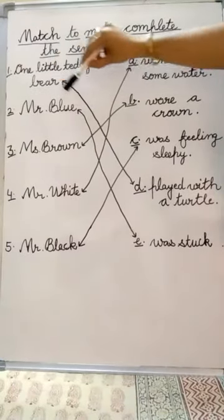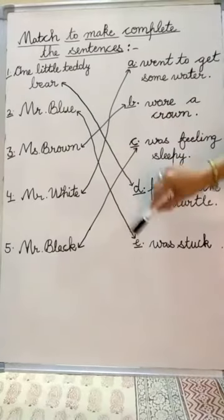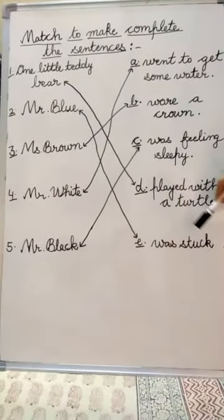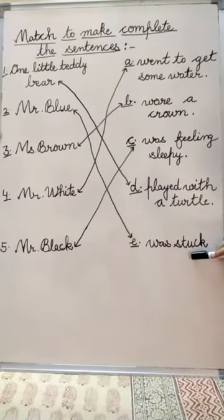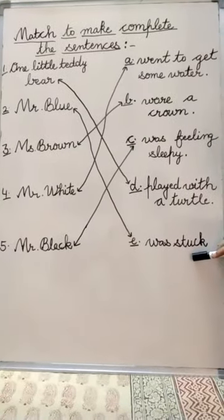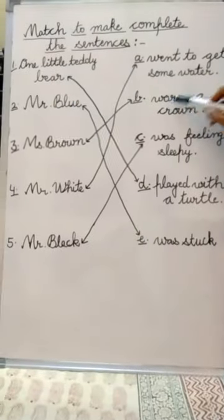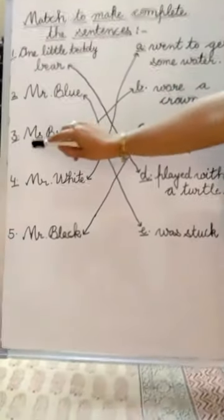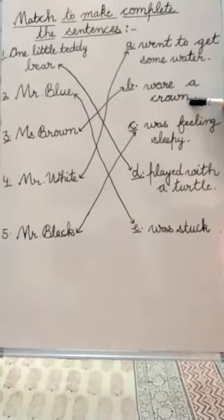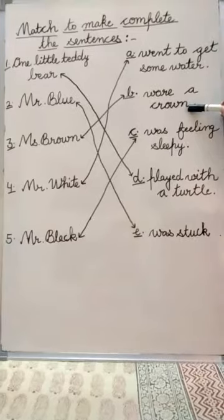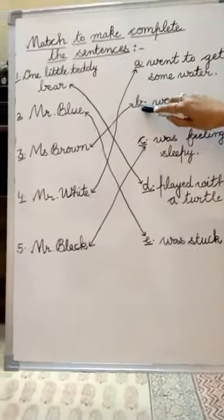Second is Mr. Blue. Mr. Blue we will match with E. Third is Mr. Brown wore a crown. He was wearing a crown. So we will match third with B.